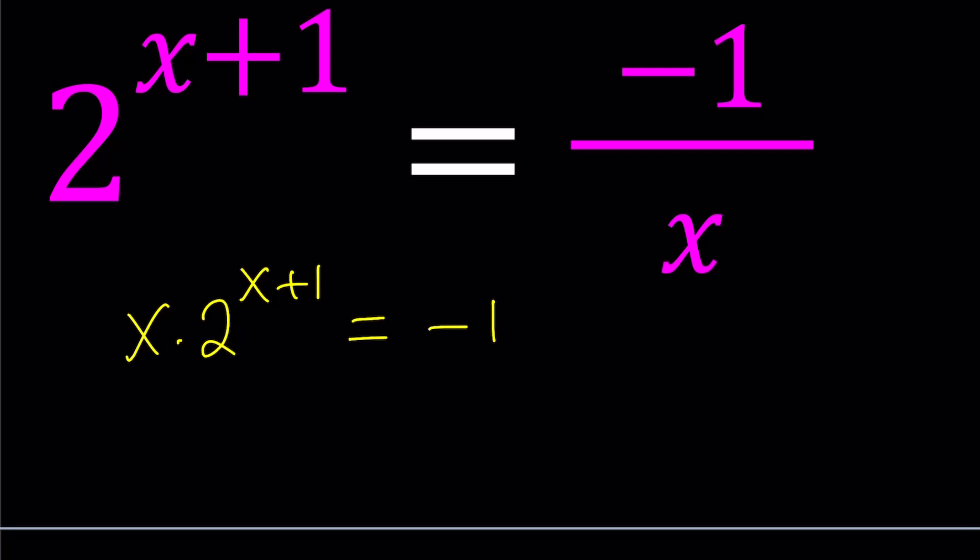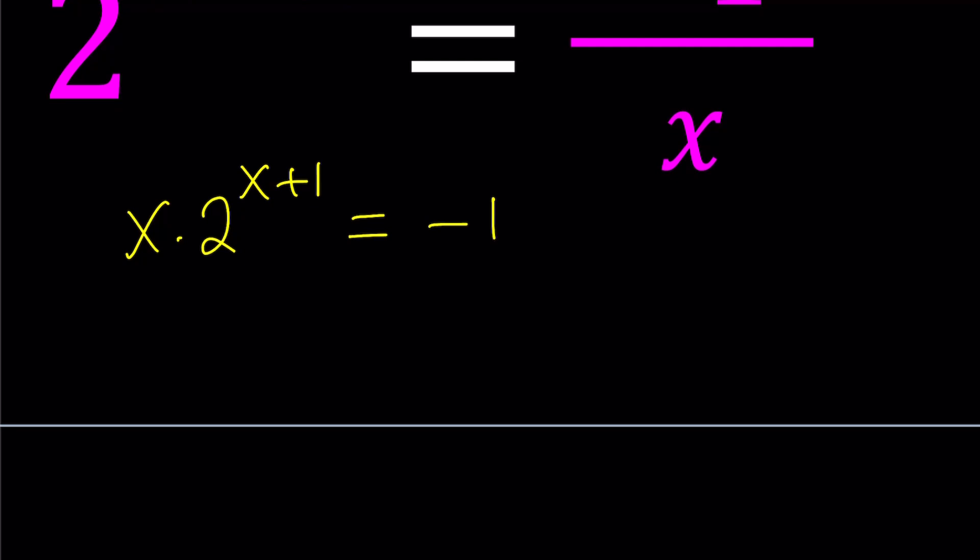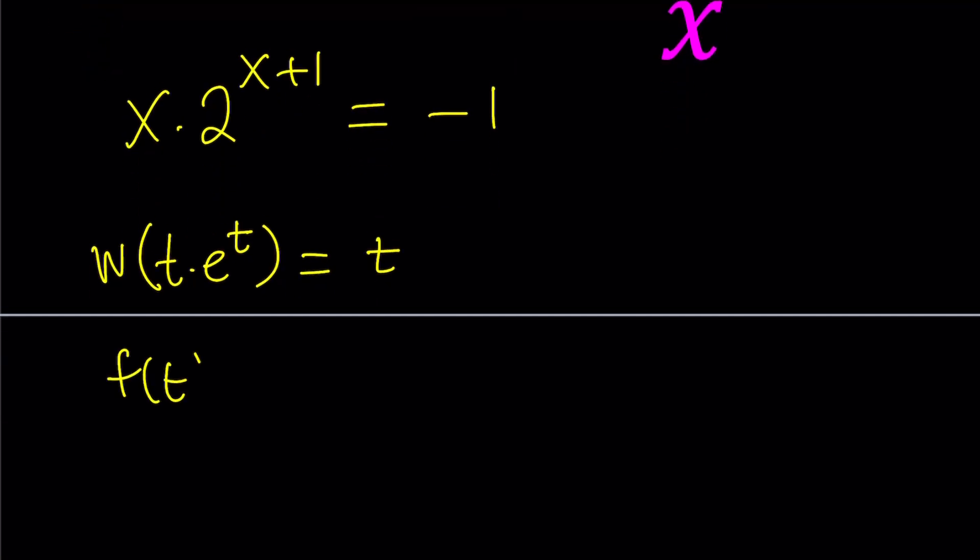To be able to use that, we need to put our expression in a certain form, such as t times e to the power t. When you Lambert W this product, this gives you t. In other words, if you have a function f of t given as t times e to the t, then its inverse would be Lambert's W function.